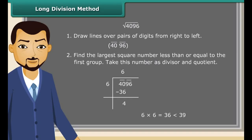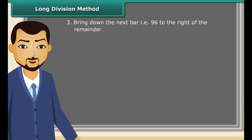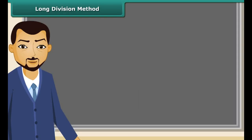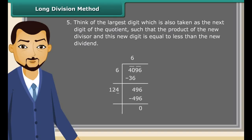Subtract 36 from 39, then bring down the next bar — 96 — to the right of the remainder. Now double the divisor. Next, think of the largest digit, also taken as the next digit of the quotient, such that the product of the new divisor and this new digit is less than or equal to the new dividend. Here, 124 × 4 = 496. Since the remainder is 0, the square root of 4096 is 64.